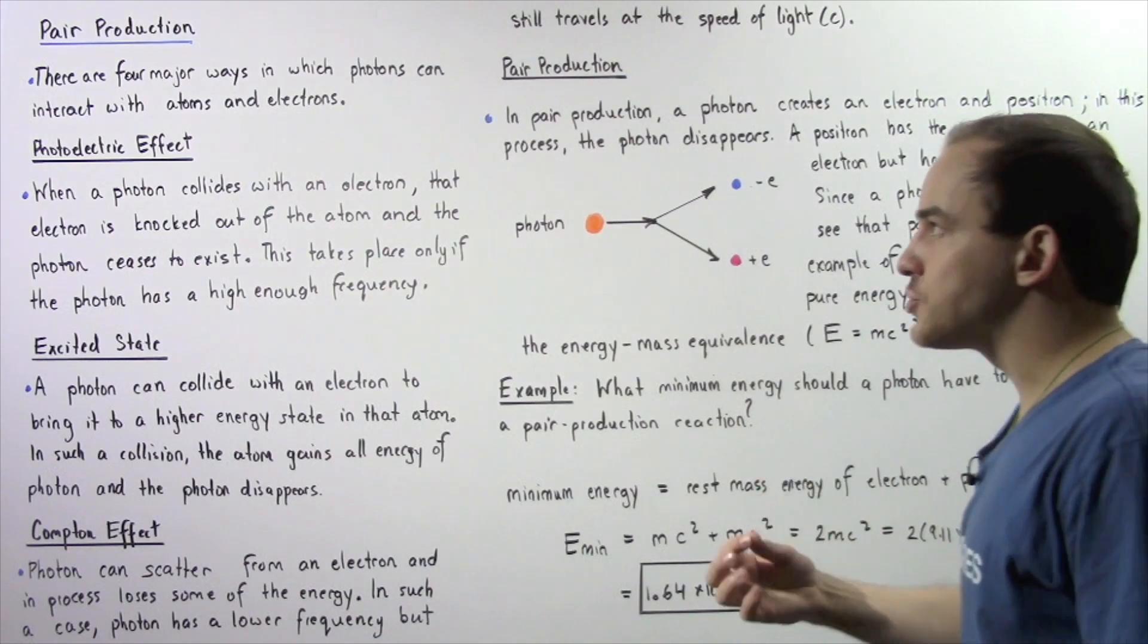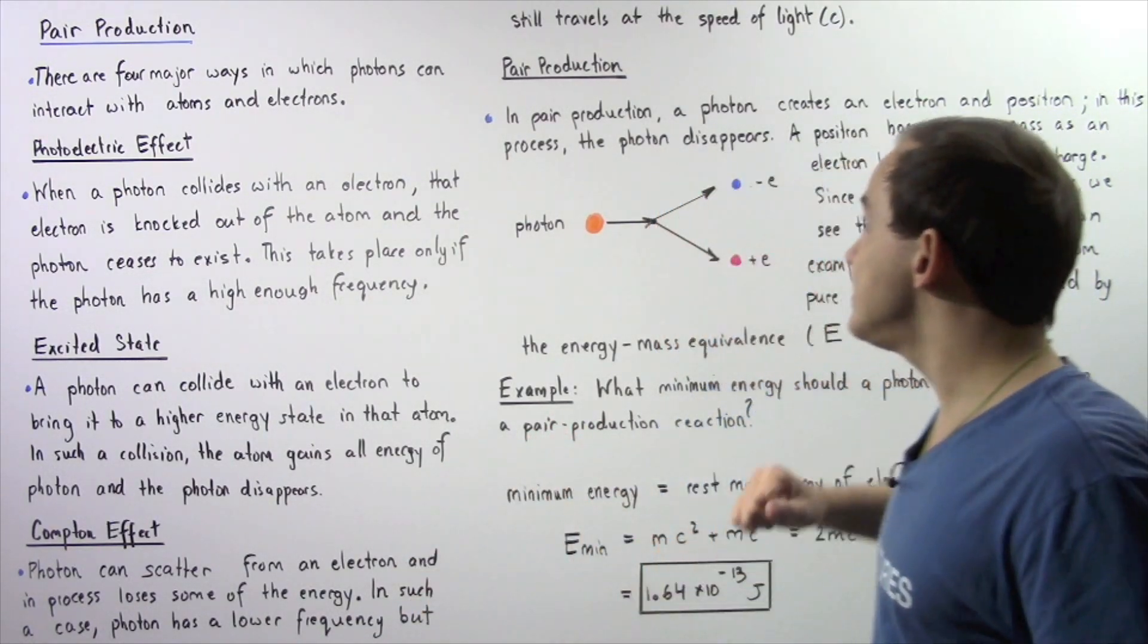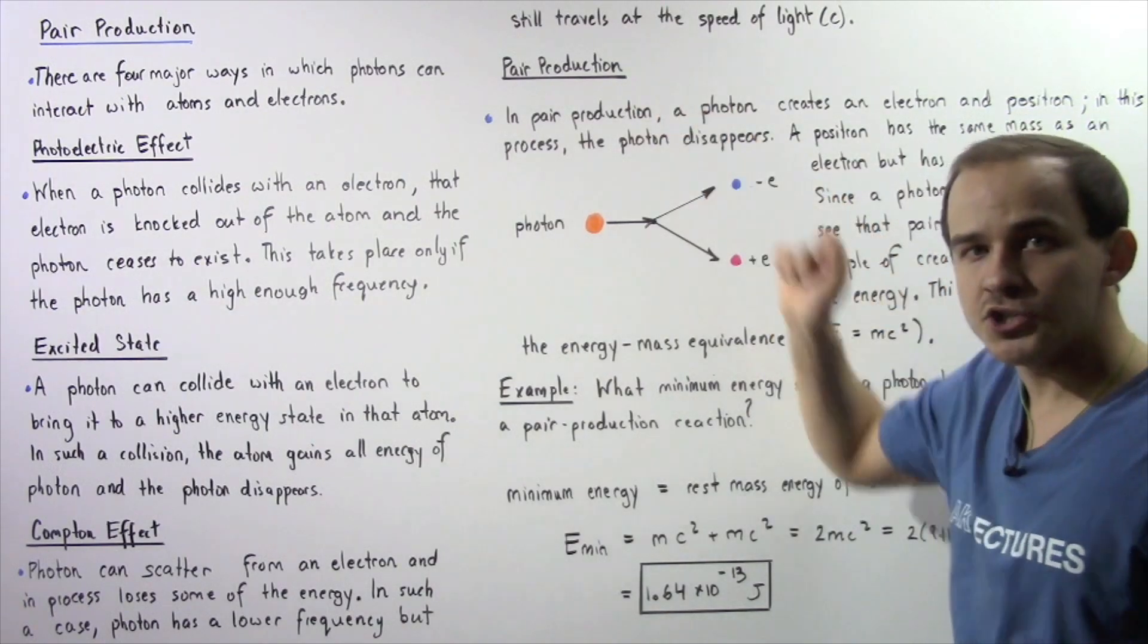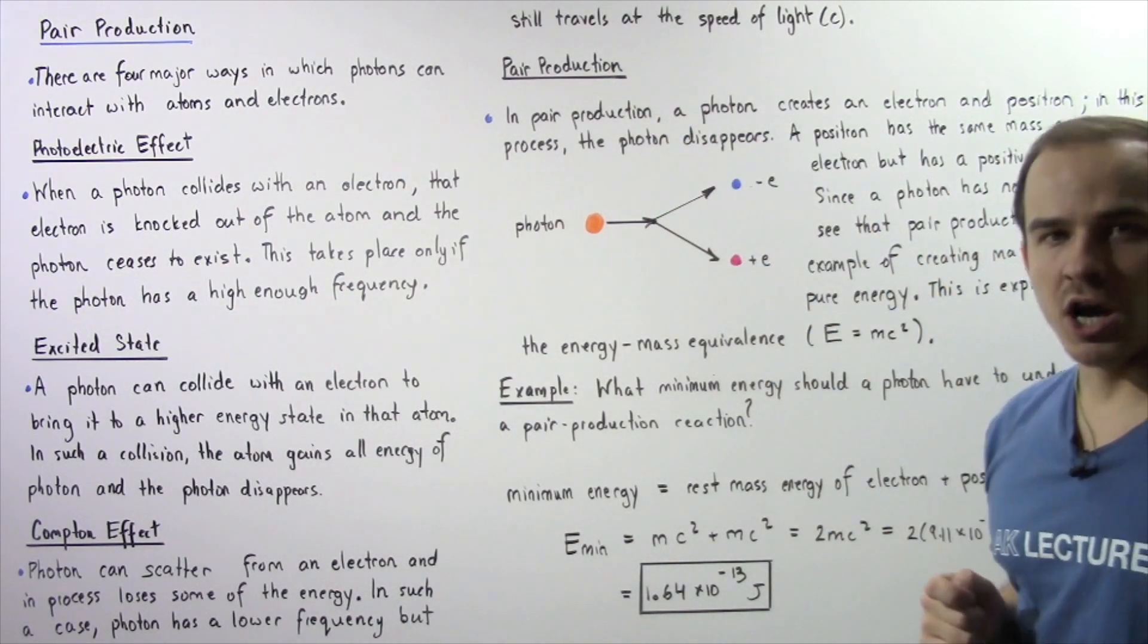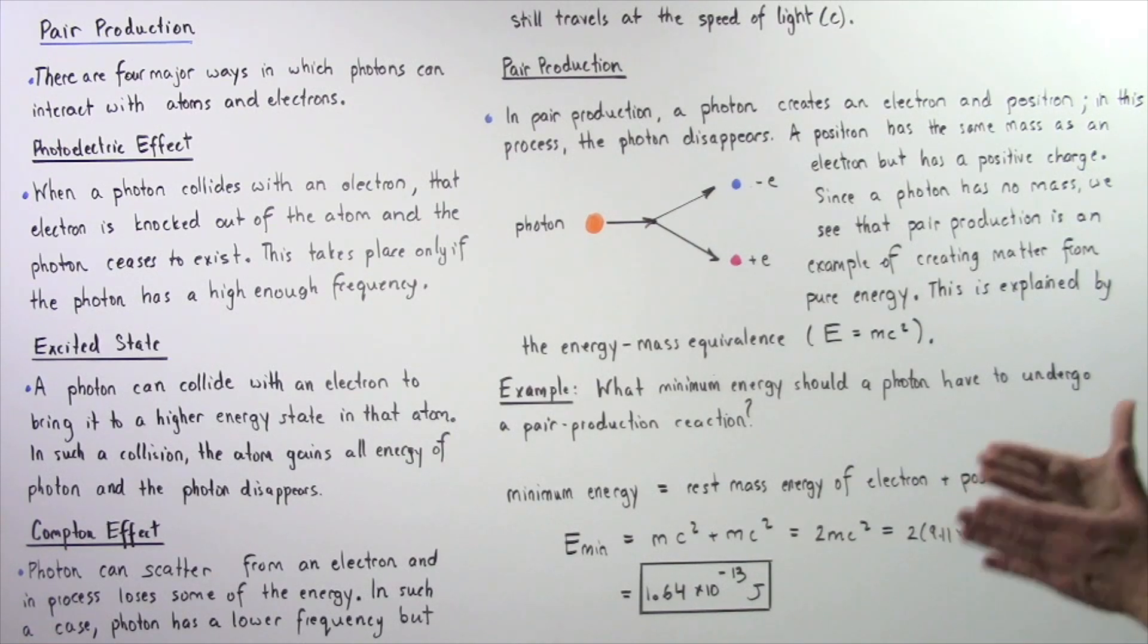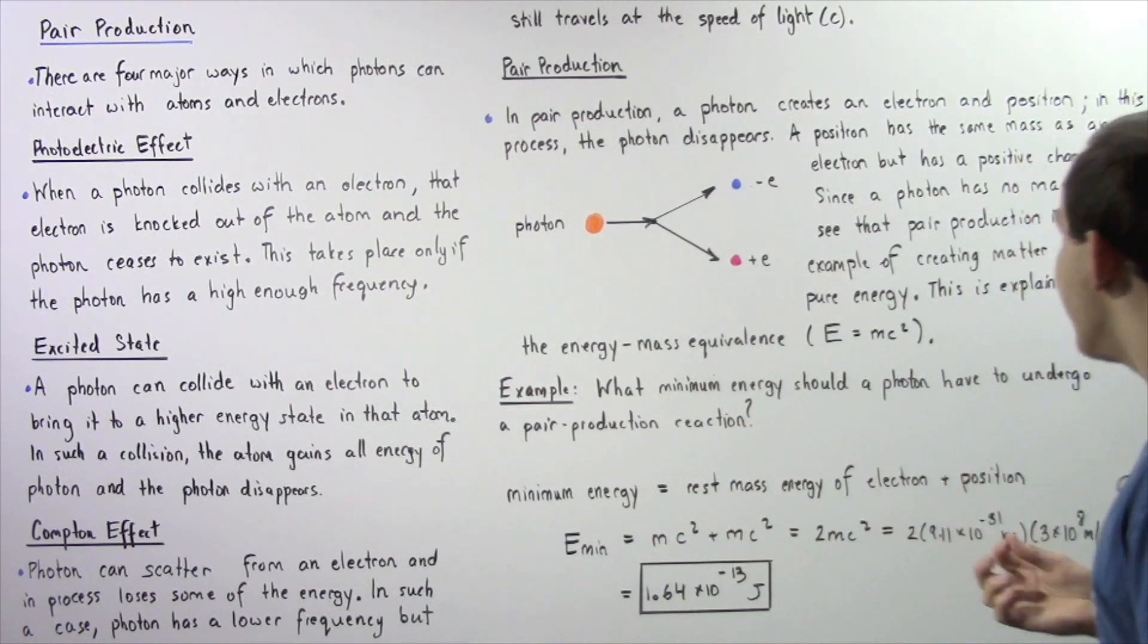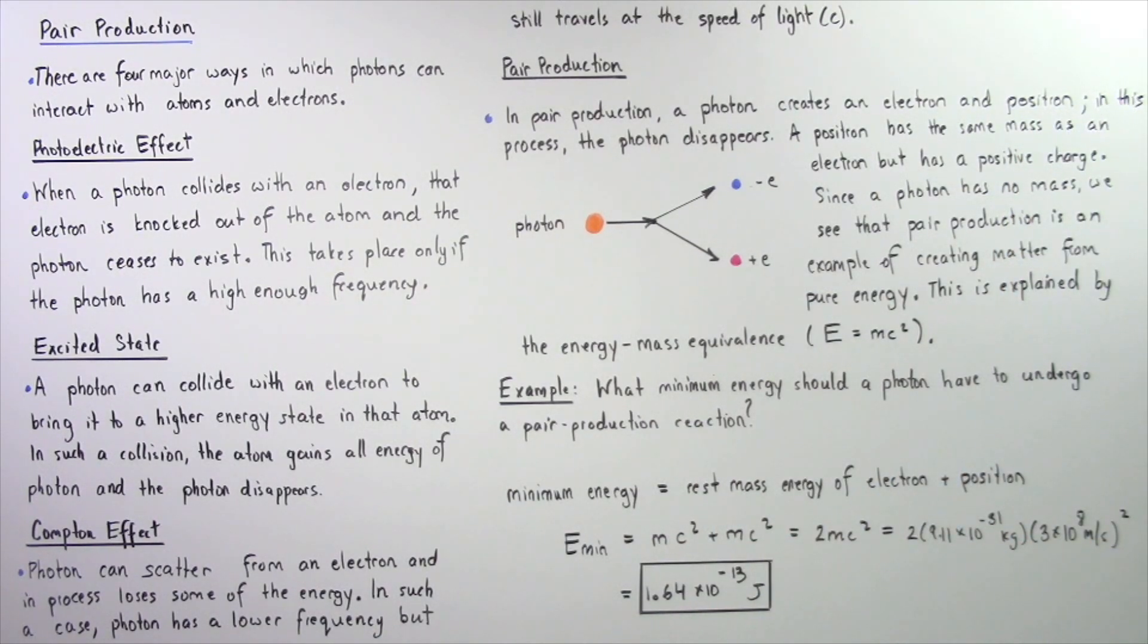And the final major method by which photons interact with matter is described by pair production. In pair production, a photon essentially disappears and creates an electron and a positron. A positron has the same mass as an electron, but it has the opposite sign. It has a positive charge.